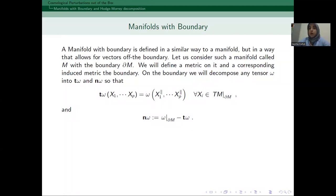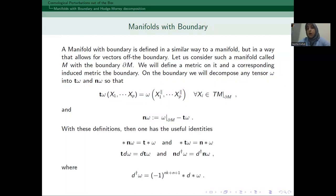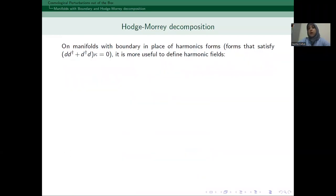Whenever you have a normal part, it's described as N omega. So, with these definitions, one has some useful identities. When you exchange a Hodge star with N, you get T with Hodge star and vice versa. And also, you see that T commutes with the exterior derivative and N commutes with the coadjoint exterior derivative. So, these will be useful for us when we try to use Hodge-Morrey decomposition and result in boundary value problem theorems.